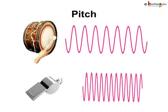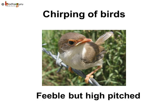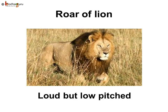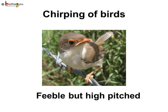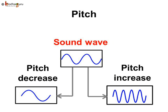For example, a sound with a low frequency will have a low pitch, such as a human's heartbeat or a drum beat. A sound with a high frequency will have a high pitch, such as a dog whistle. A bird makes a high-pitched sound, whereas a lion makes a low-pitched roar. However, the roar of a lion is very loud, while the sound of a bird is quite feeble. To reiterate, the frequency determines the shrillness or the pitch of a sound.